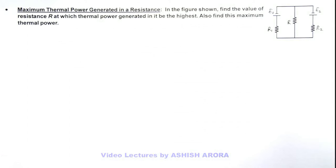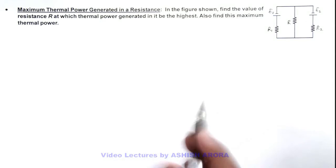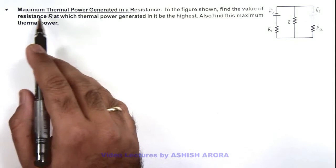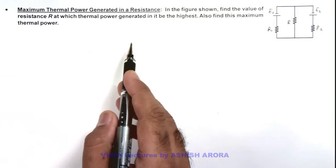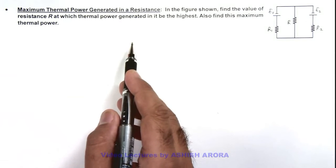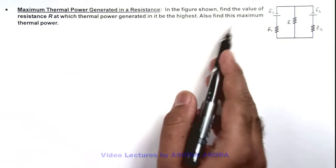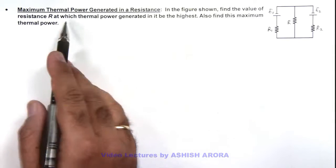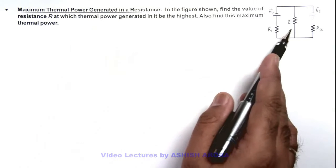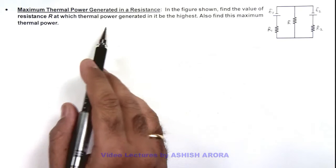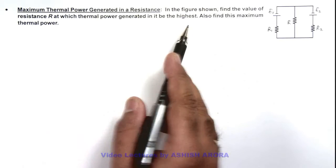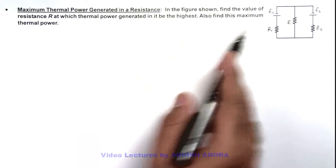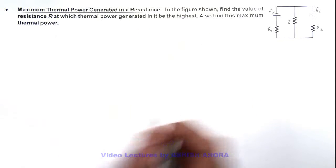In this illustration, we'll study about the maximum thermal power generated in a resistance. Here in the figure shown, we are required to find the value of resistance R at which the thermal power generated in it is the highest, and we are also required to find this maximum thermal power.